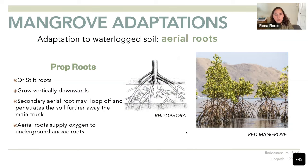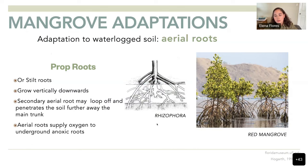Let's go into more detail about what mangrove adaptations make them succeed. The first and most important is they can adapt to waterlogged soil — meaning they are dealing with anoxic soils and a lot of water most of the time.